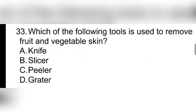Question 33. Which of the following tools is used to remove fruit and vegetable skin? A. Knife. B. Slicer. C. Peeler. D. Grader. Correct answer: C. Peeler.